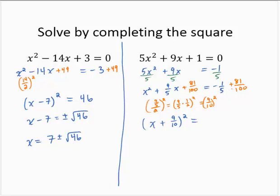On the right-hand side, we have negative 1 fifth plus 81 over 100, getting a common denominator. Negative 1 fifth is the same as, we'd have to multiply by 20, negative 20 over 100 plus 81 over 100. That's 61 over 100.